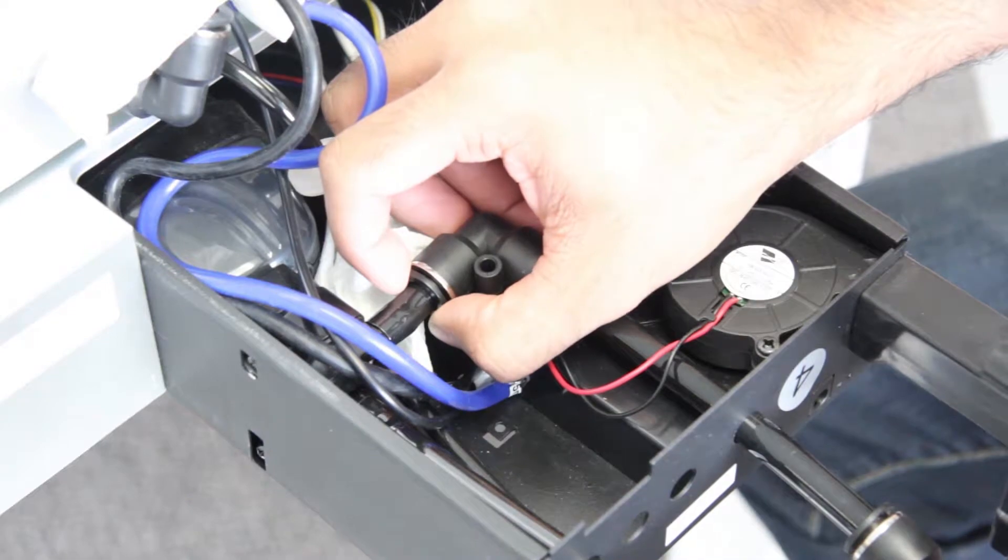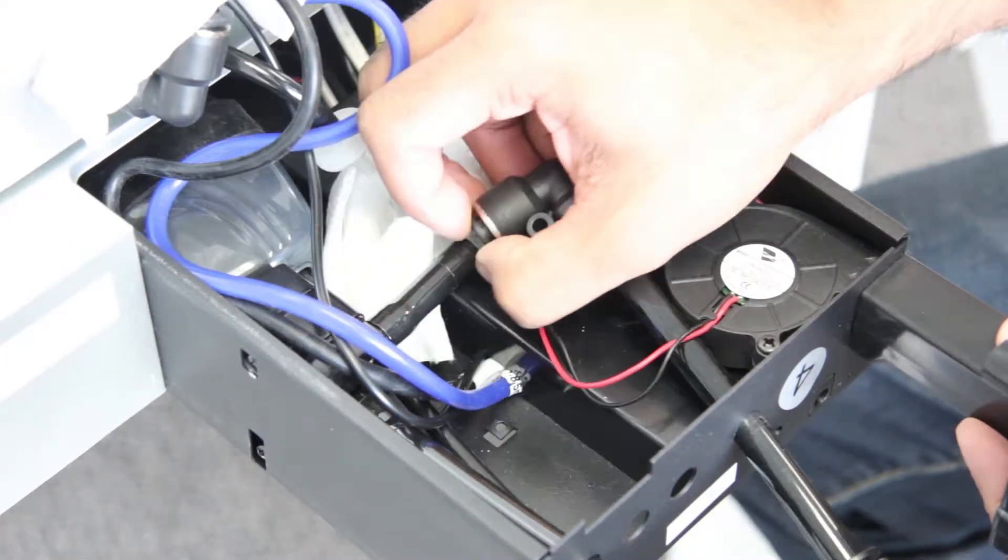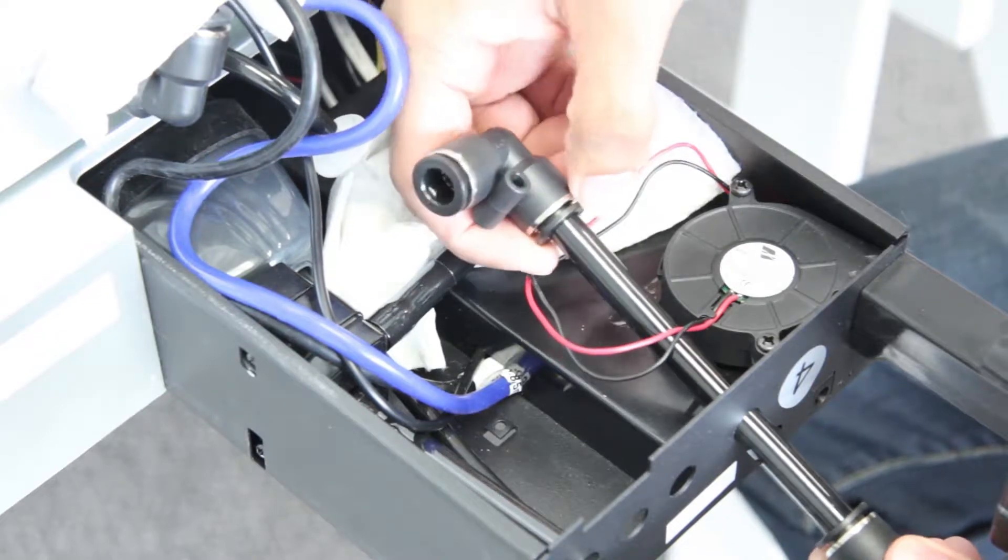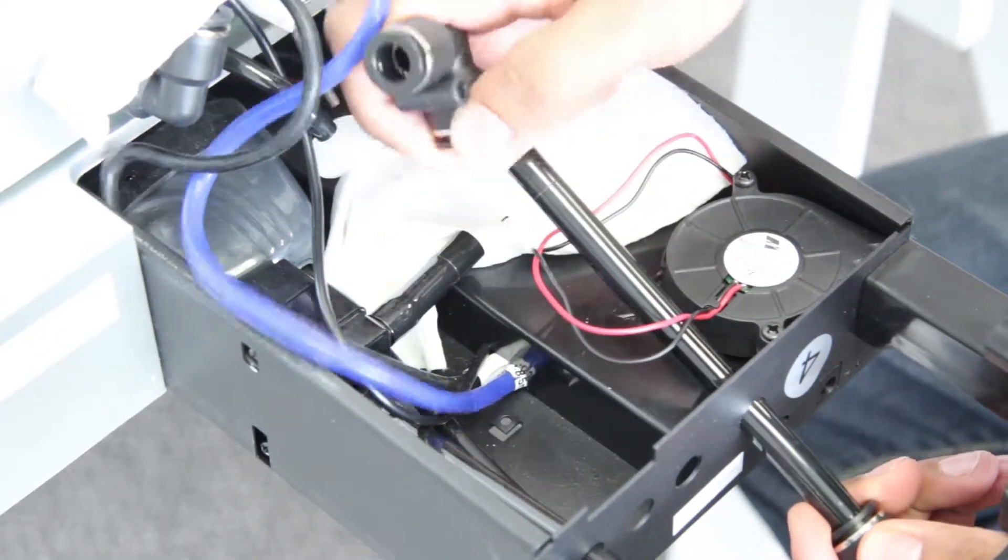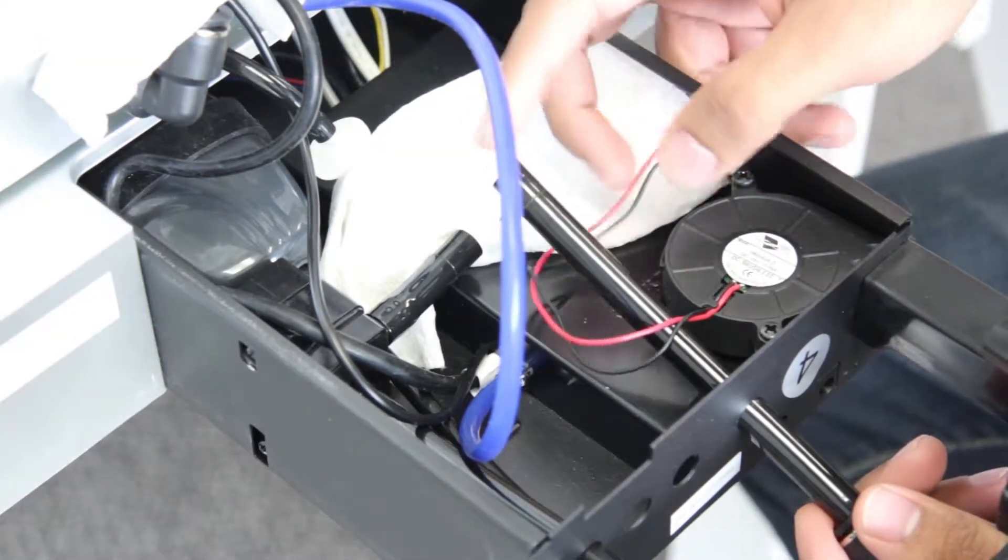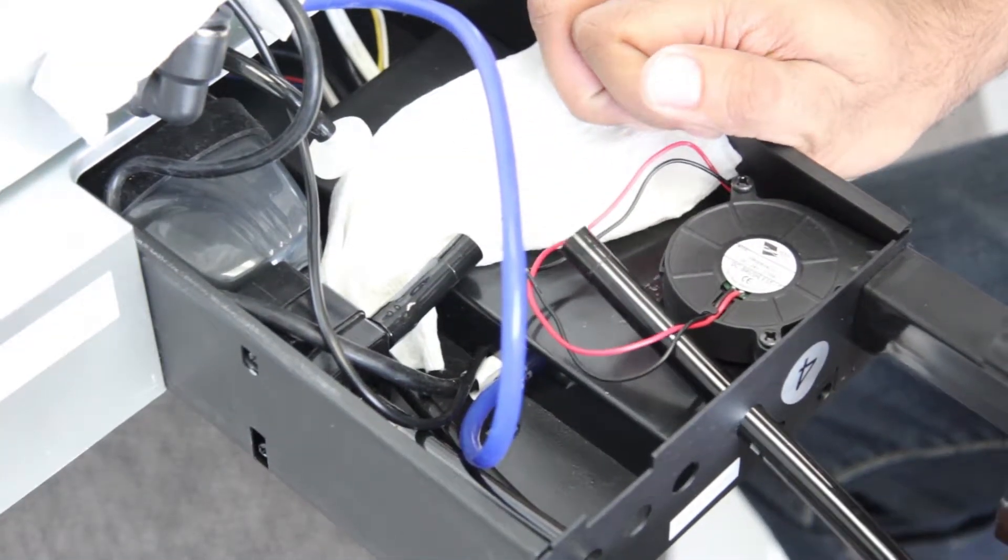Next, grab this valve, pull it like so, then pull this side as well. Now the valve should be completely on its own. You can pull out this tube simply by taking it out like so.